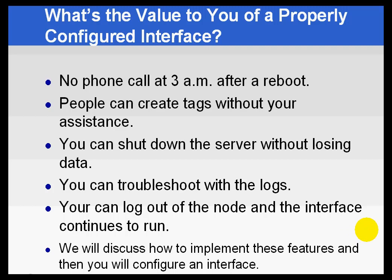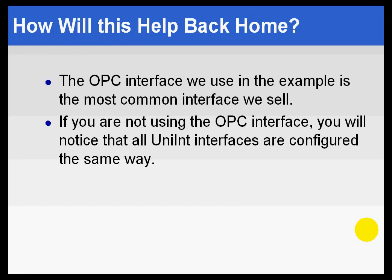On a practical note, this is the section of the class that most people are most anxious about — will I be able to get the interface to work? We will definitely go through all the procedures so that you can get this to work when you go back home and configure your interface the same way we do it in this class. In this class, we're going to use the OPC interface as an example. It is the most common interface we sell, so it's a very good example. Even if you don't have an OPC interface, the OPC interface uses something called UniInt — the universal interface core code that all of our interfaces share. So almost everything we do with the OPC interface, you're going to be doing something very similar when configuring your own interface. The UniInt-based interface is going to be configured very similarly to the one we're using as the example.